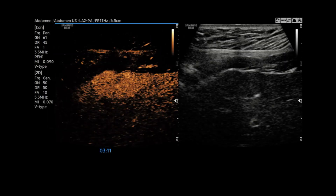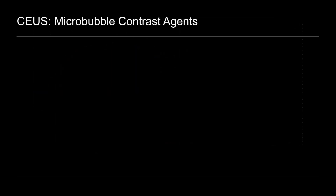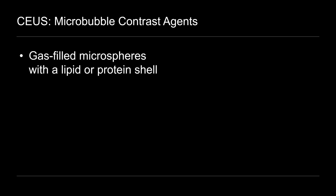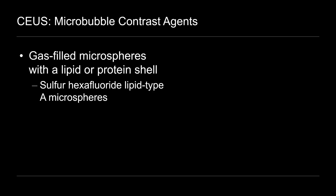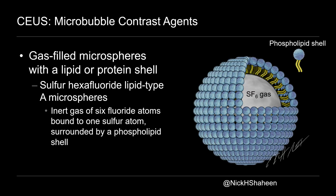This image is showing the lesion about three minutes after the time of contrast injection. On contrast ultrasound, this would be the late phase or equilibrium phase, which starts after two minutes. And you can see that the mass remains hyper-enhancing relative to the surrounding parenchyma. There's no evidence of washout, which is something we look for on contrast ultrasound, as washout is typically a finding of malignancy, meaning that the lesion will become darker relative to the surrounding parenchyma. And just a reminder, the agent we use for contrast ultrasound are micro-bubbles, which are gas-filled microspheres that have either a lipid or a protein shell. In the example that we just saw, the agent was sulfur hexafluoride lipid type A microspheres, which is an inert gas of six fluoride atoms bound to one sulfur atom, and that's surrounded by a phospholipid shell.